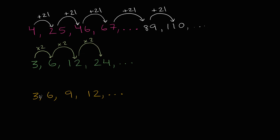Now let's look at this last one. So the first two terms here are the same. Three and six, the first two numbers here. But I could say, well maybe this is times two, but then to go from six to nine, I'm not multiplying by two.